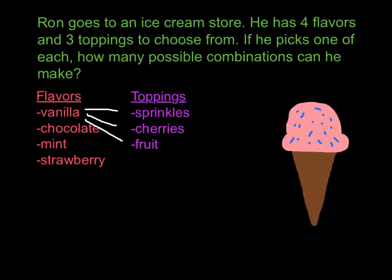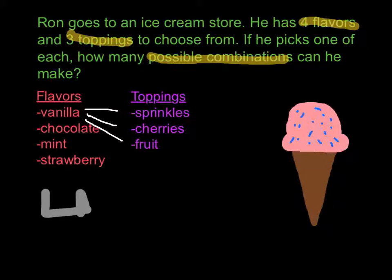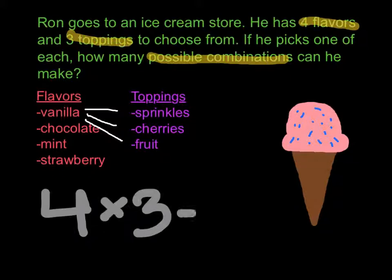A way to find the possible combinations is to take the four flavors and the three toppings and multiply them together. So we put four times three, which equals twelve.